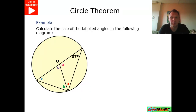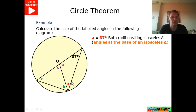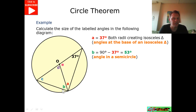Working with a couple of examples to find some missing angles. Angle A here — we can say this is 37 degrees, the same as the angle just here, because we've got two radii which have formed an isosceles triangle. Angle B here is going to be 53 degrees because of angles in a semicircle — we've got a diameter and lines coming from it forming a triangle, so it's formed 90 degrees.